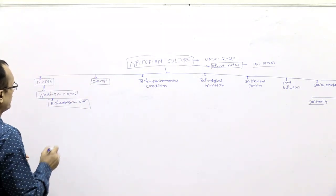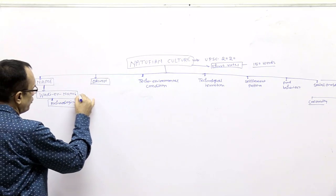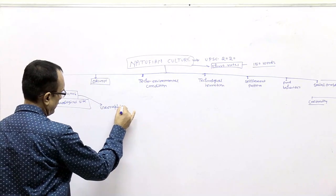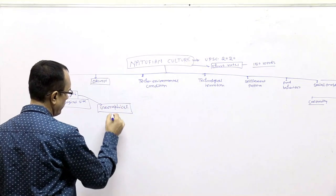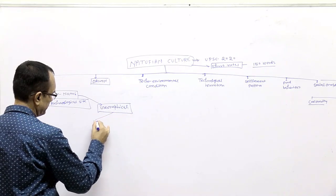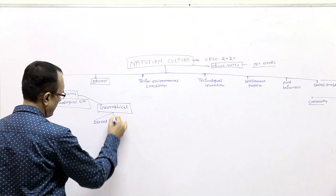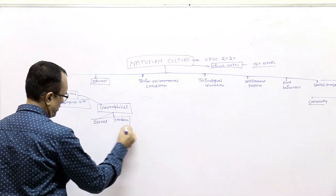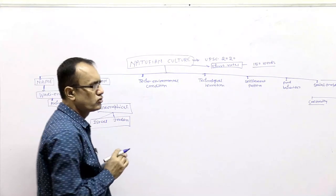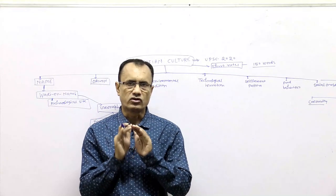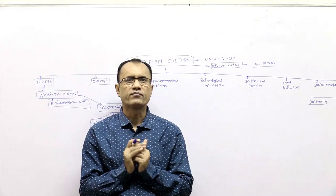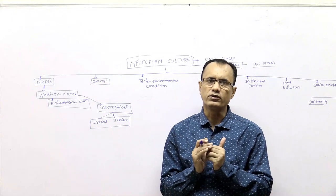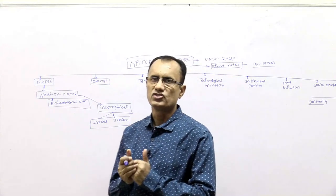The second important thing is that Natufian culture developed or evolved in Israel and Jordan. These are the two important geographical areas where that culture was concentrated. It means Natufians lived in Israel and Jordan.